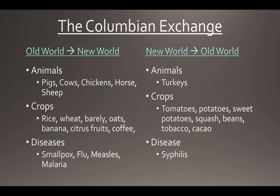Regarding the Columbian Exchange, the Old World brought many new things to the New World. Animals included pigs, cows, chickens, horses — which were not native to North America — and sheep. Crops included rice, wheat, barley, oats, bananas, citrus fruits, and coffee. But they also brought diseases that were responsible for wiping out almost the entire native population in the Americas before the English showed up about 100 years later.